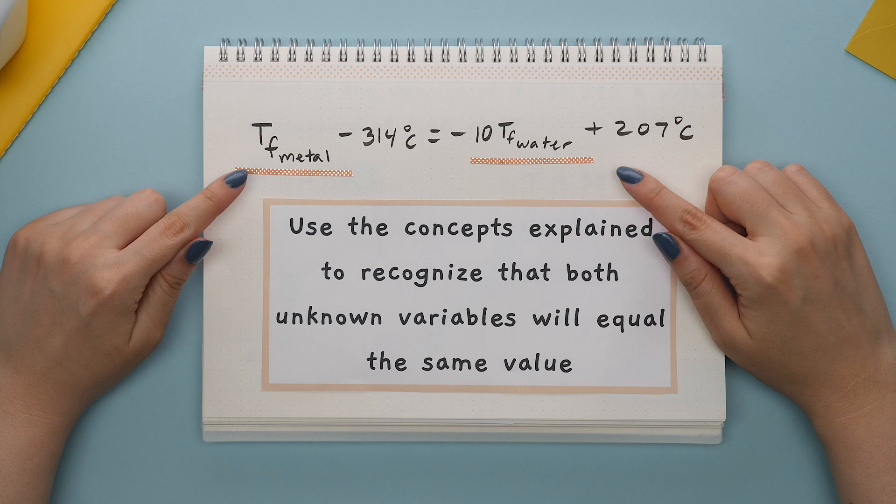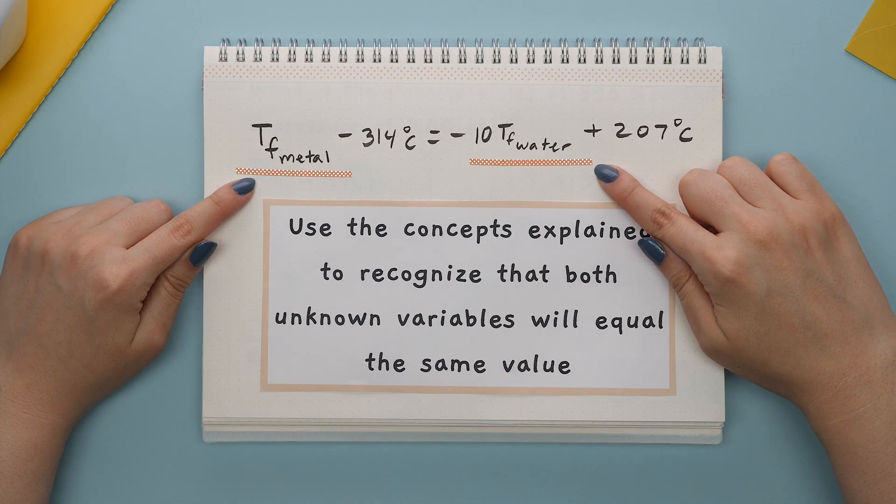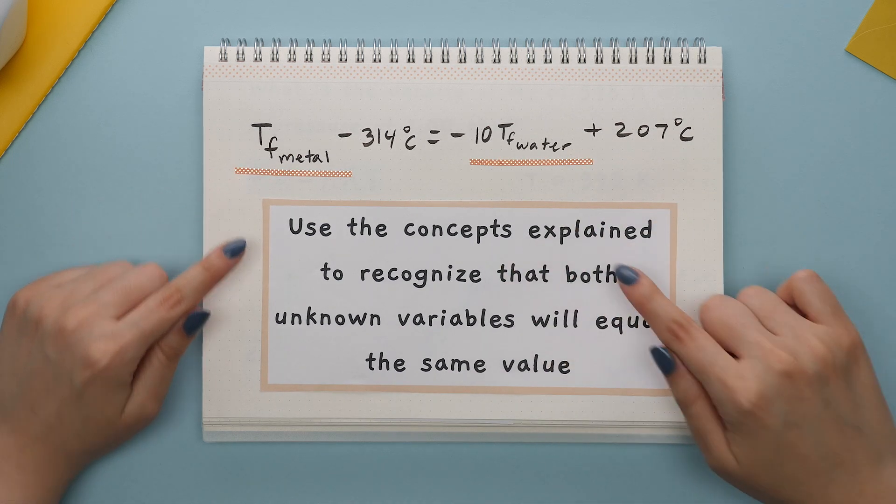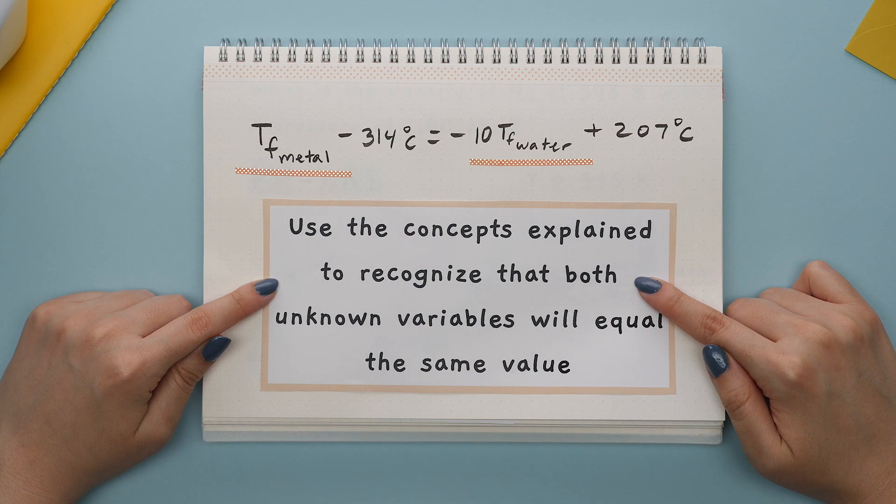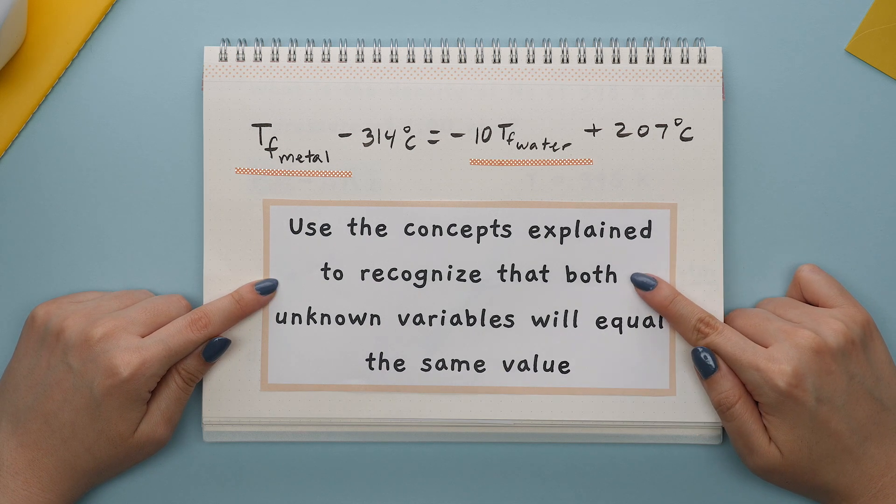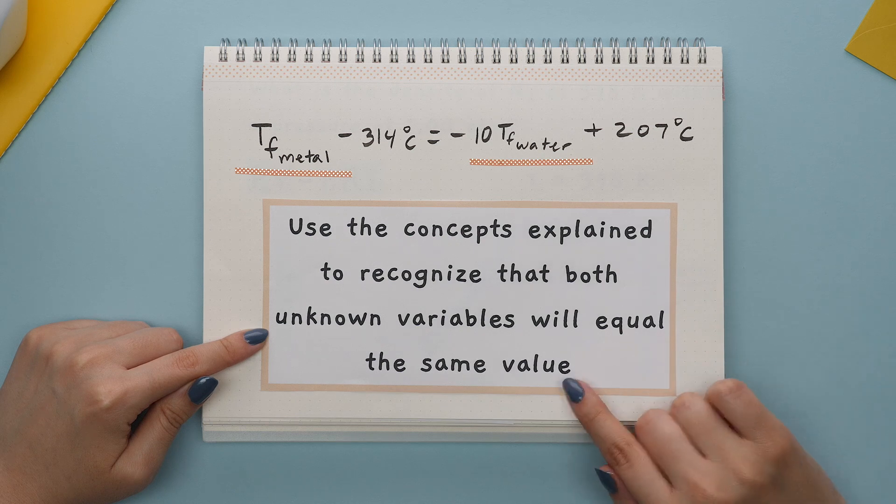There are times when you have two unknown variables in an equation, but must use the concepts explained in that specific chemistry section to recognize that both unknown variables will equal the same value.